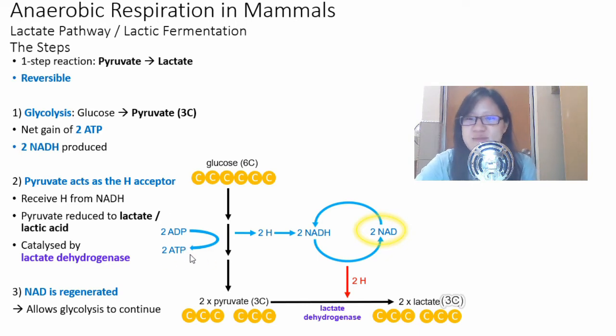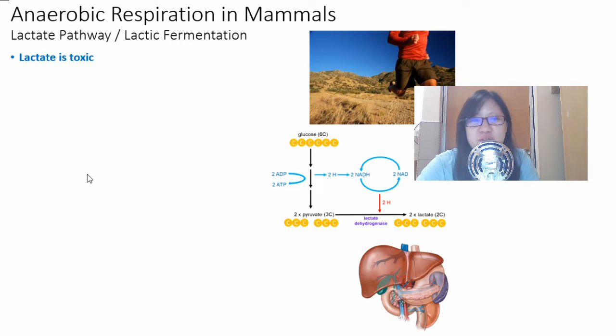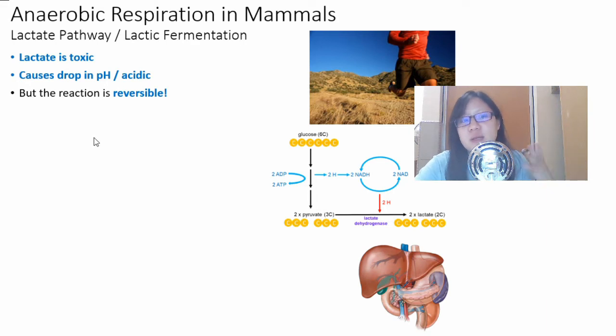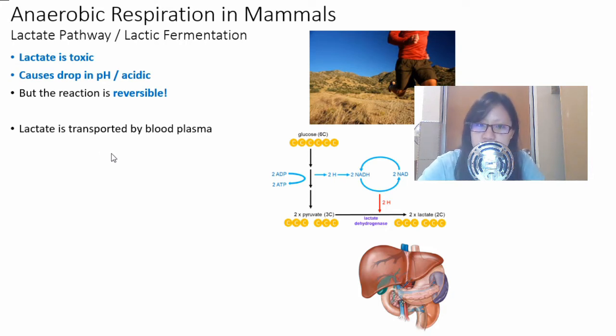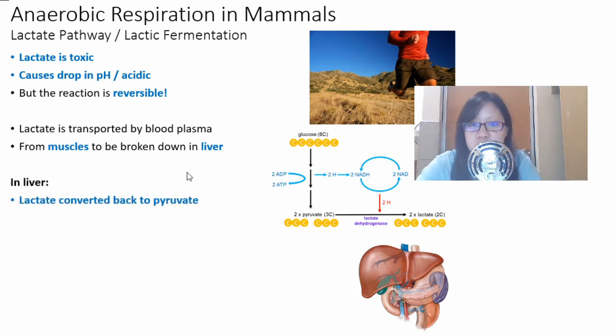Remember that this pathway cannot go on indefinitely because lactate is toxic. It is lactic acid. It causes a drop in pH and that's not good for your body. It needs to be at a certain optimal pH for your enzymes to be functioning optimally. But the hope is that the reaction is reversible. So what happens to lactate after you start exercising and stretching your muscles? Your lactate will be transported by blood plasma from the muscles to be broken down in the liver.